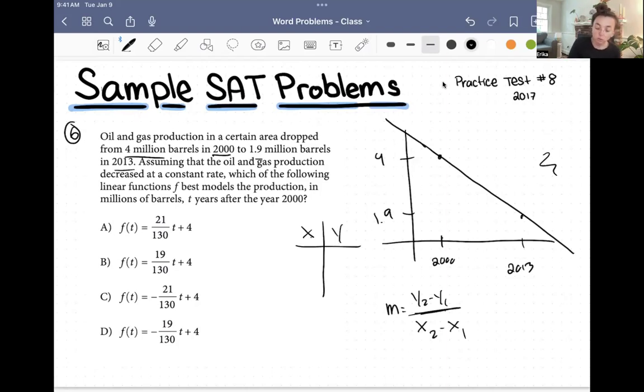So for X, we're going to have 2000. Now, one of the key things to keep in mind here is that the year is years after the year 2000. So when we're talking about the year 2000, we're actually going to use zero because there's zero years after the year 2000 because we're actually on the year 2000. So zero and then we're going to have four million and then 2013 is 13 years after the year 2000. So we're going to have 13 here and then that is going to be one point nine million barrels.